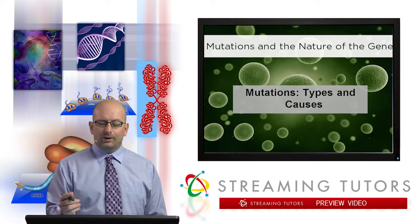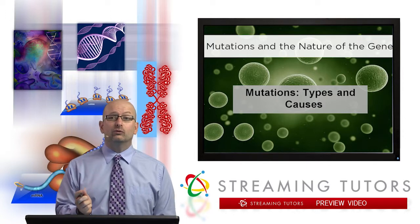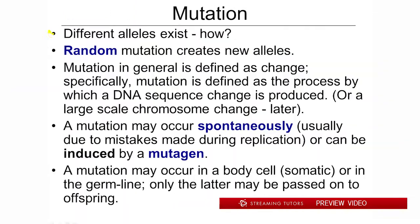We're going to get into some technicalities with respect to mutations, but a fundamental question exists: ever since Mendel and subsequently on, we've seen that different alleles exist — Big P, little p, red eyes, white eyes, whatever they may be. How do different alleles come into being? Without going into a long exposition on evolution, the assumption is that over time alleles are changing from one into another, and we'd like to know how that occurs.